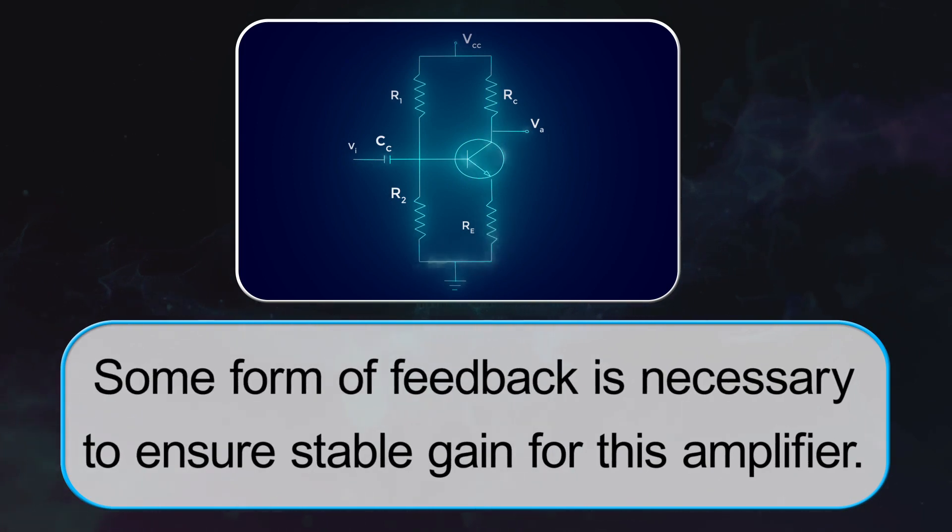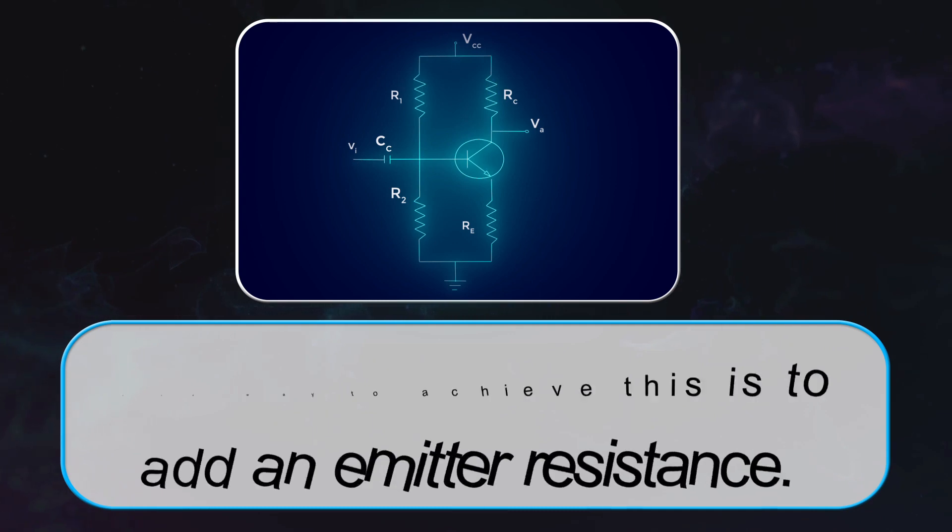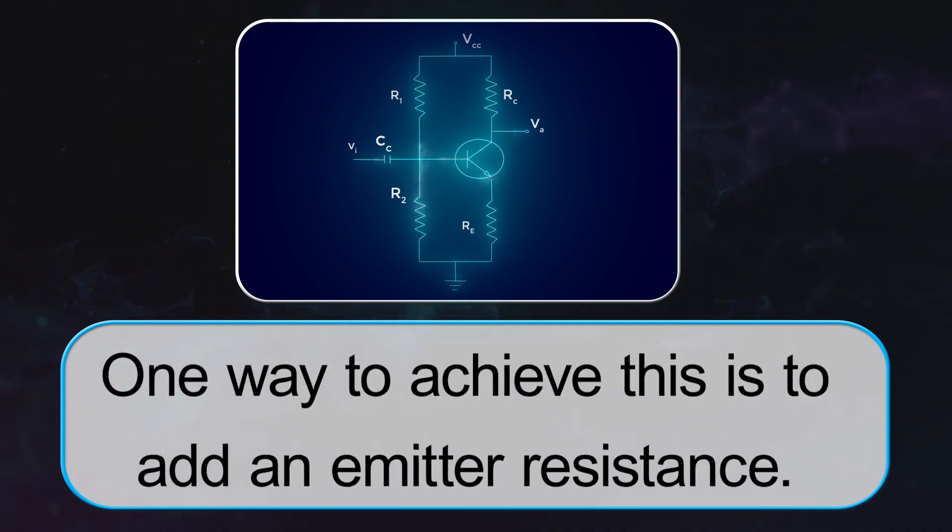Some form of feedback is necessary to ensure stable gain for this amplifier. One way to achieve this is to add an Emitter Resistance.